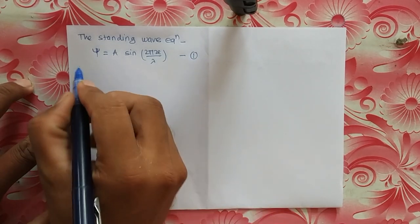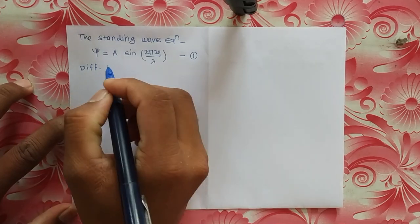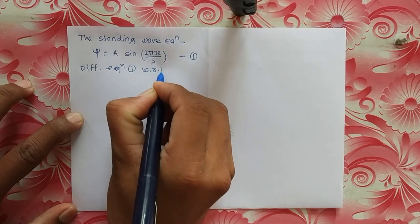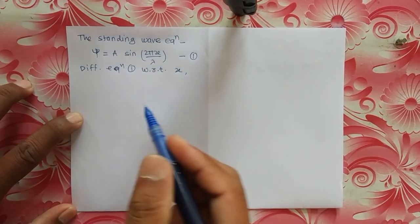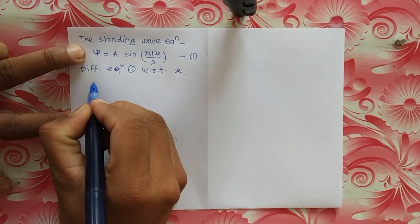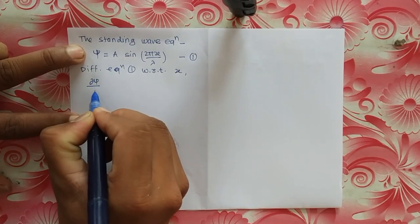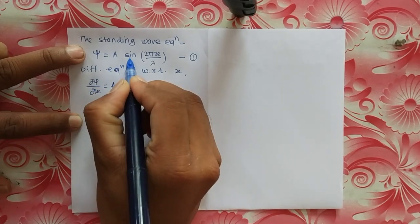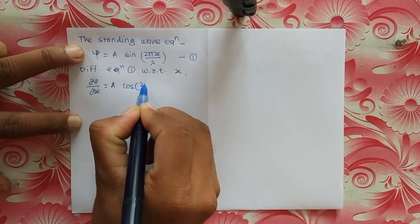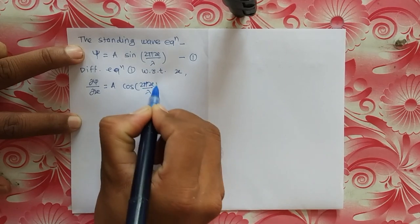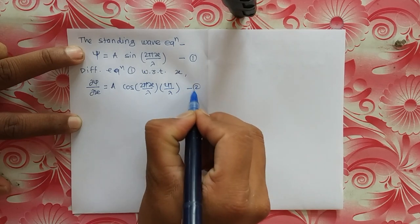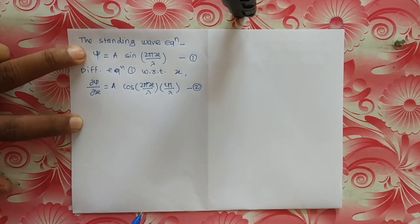We take the differentiation of equation 1 with respect to x. We get d-psi/dx equals a times cos(2πx / lambda) times (2π / lambda). This is equation number 2, which is the first derivative of equation number 1 with respect to x.